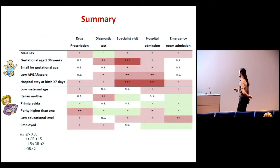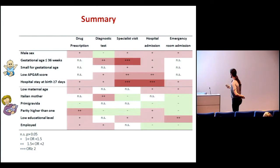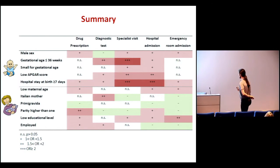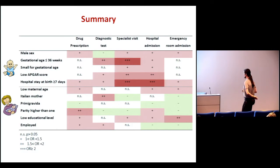As a summary, looking at all variables, low gestational age and hospital stay at birth may be the most impactful in terms of all outcomes. For drug prescription and emergency room admission, there is no influence of the most important neonatal variables, while maternal factors seem to play a role. For specialist visits and hospital admissions, as expected, other neonatal variables have a greater effect.